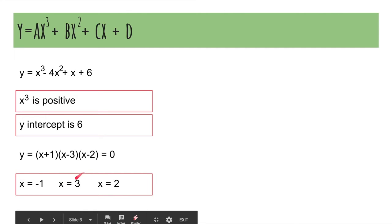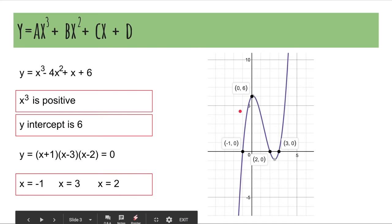x is negative 1, x is 3, and x is 2. The graph will look like this. So, there's your y-intercept. Not the maximum point, the y-intercept. And these are your x solutions.